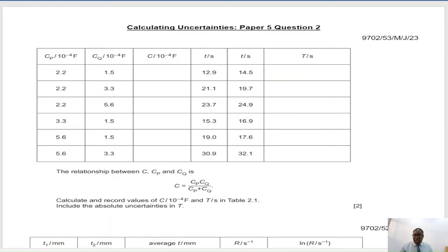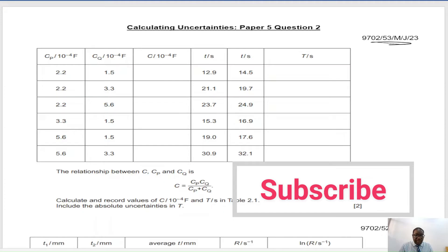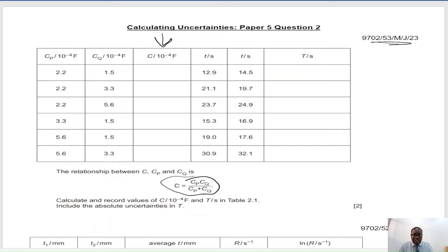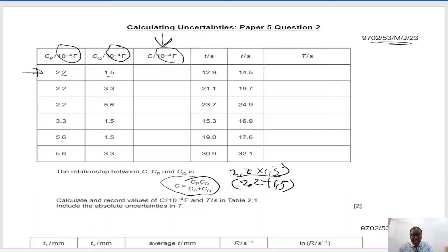The first scenario is from the May/June 2023 paper 5.3. You are asked to find C in a column and the formula will be given: C is equal to the product of Cp and Cq over the sum of Cp and Cq. For the first one, if the indices are the same — like 10 to the power of 4 — you can just work with the numbers as they are: 2.2 times 1.5 over 2.2 plus 1.5, which gives 0.89. The number of significant figures must be consistent — 2SF throughout.